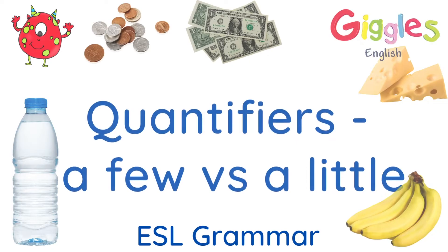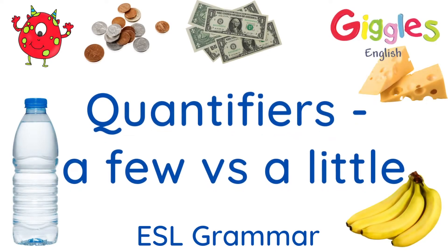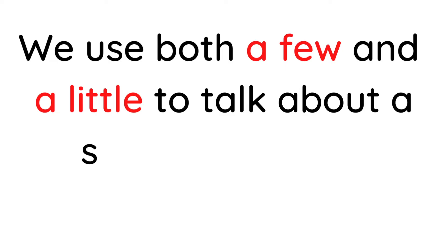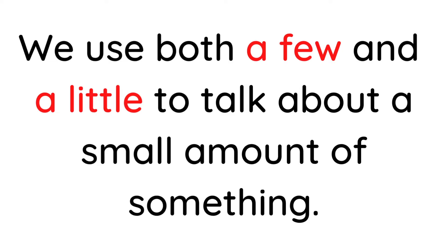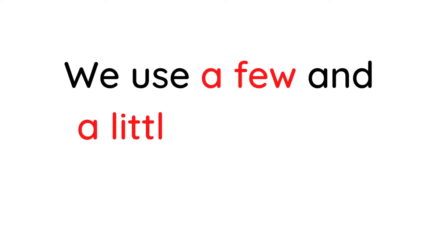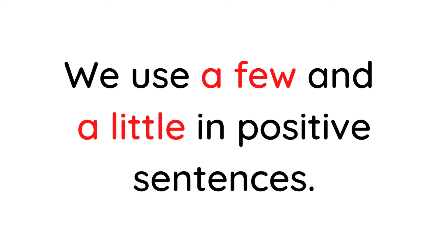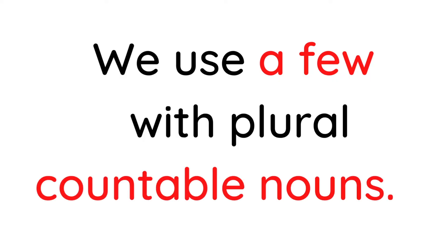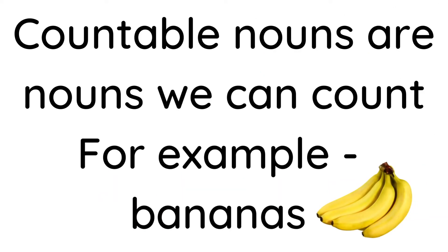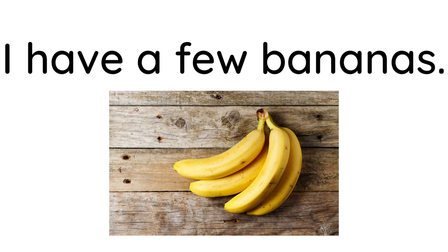Quantifiers: a few versus a little. We use both a few and a little to talk about a small amount of something. We use a few and a little in positive sentences. We use a few with plural countable nouns — nouns we can count. For example, bananas: I have a few bananas.